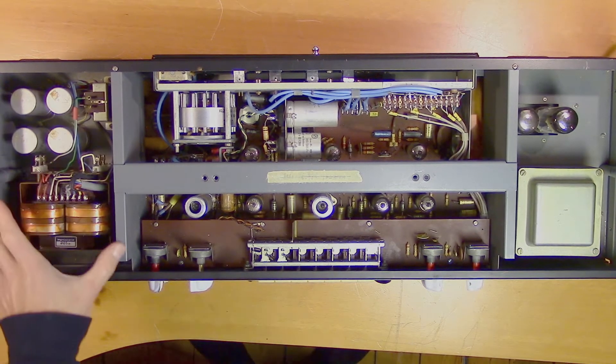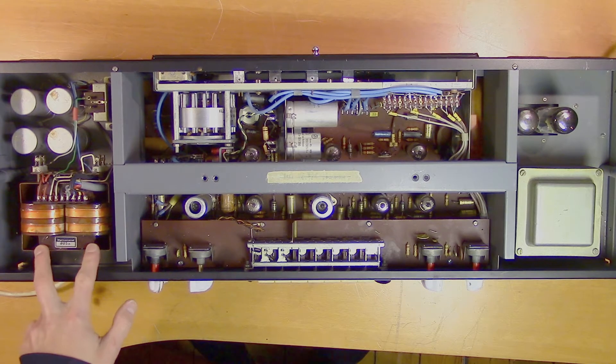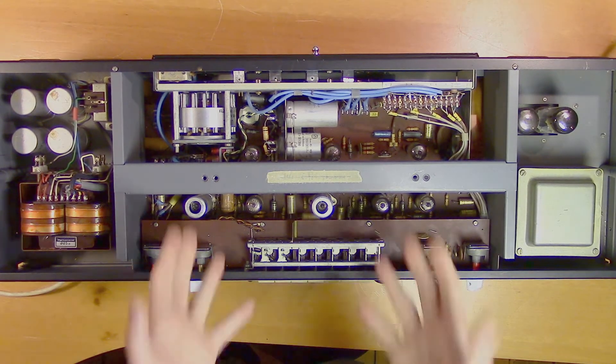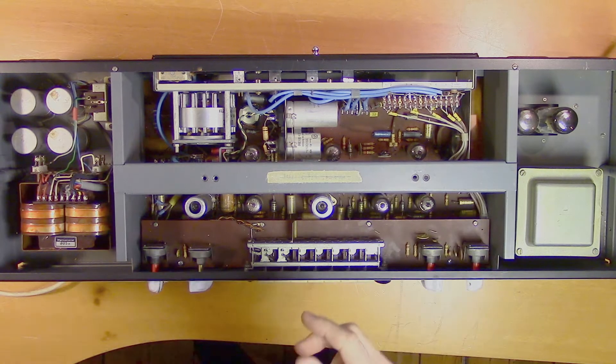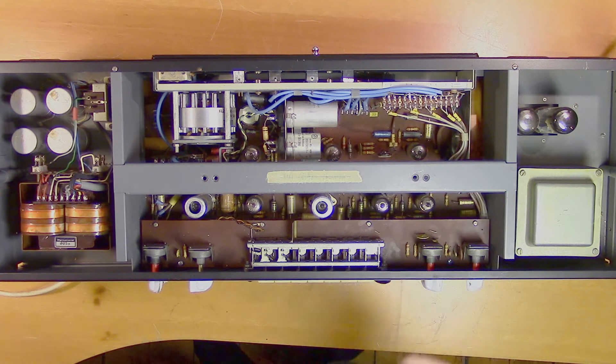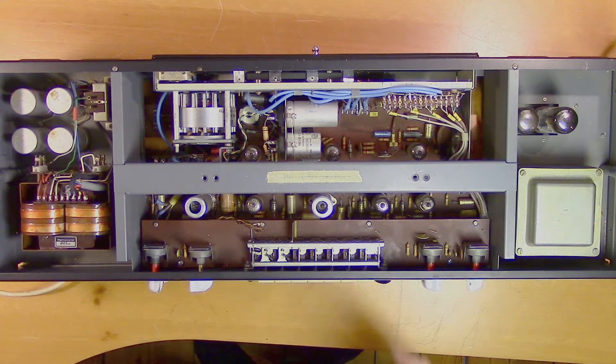So let's start with the power supply section. We have Danachord's own input transformer, vacuum impregnated it seems. Then we have the signal processing section, and as you can see, it's all neatly laid out, everything is thoroughly labeled, and we also have all Telefunken vacuum tubes.